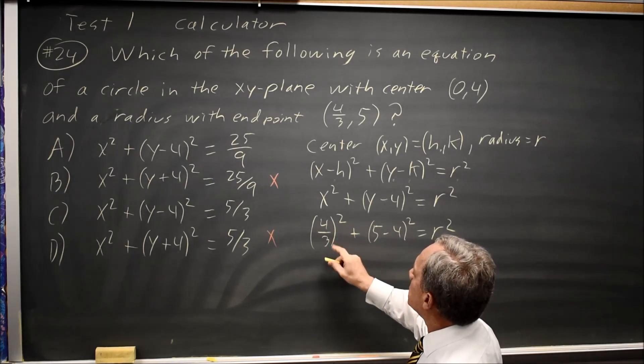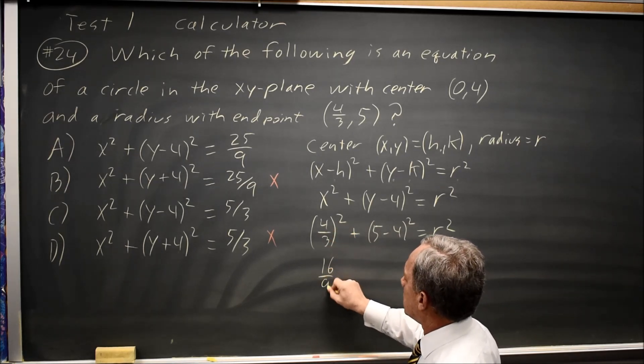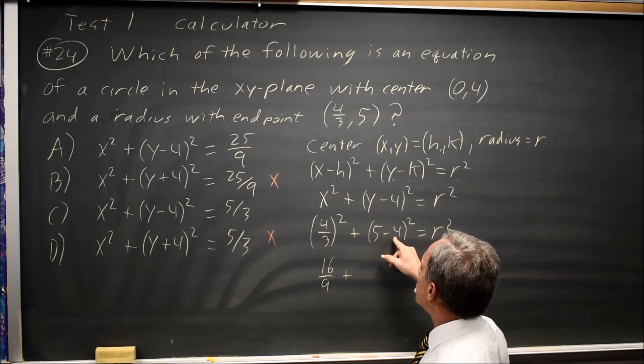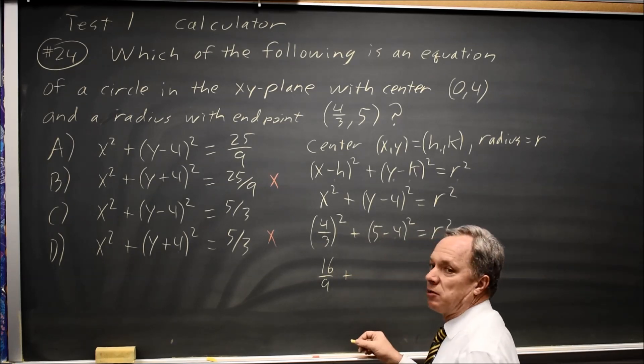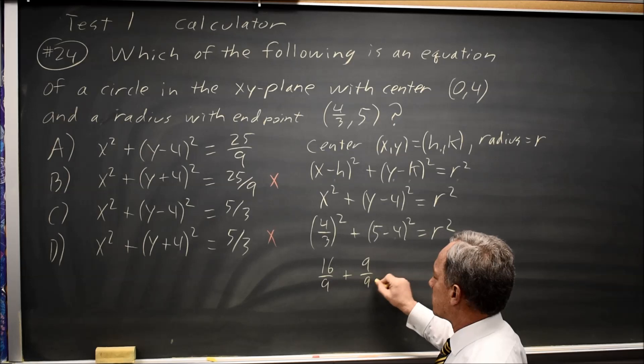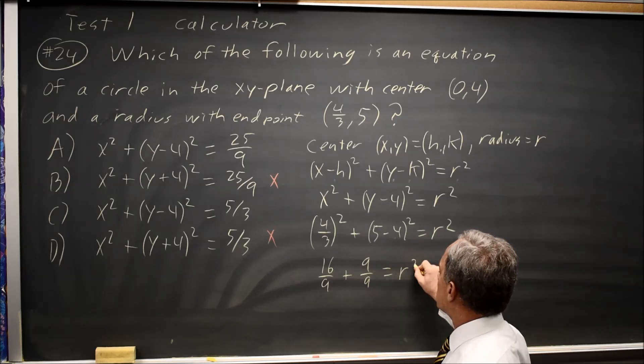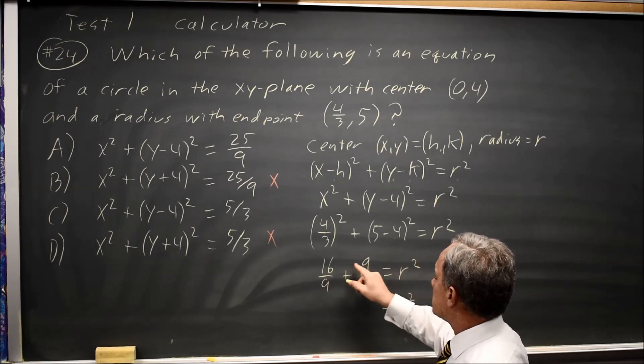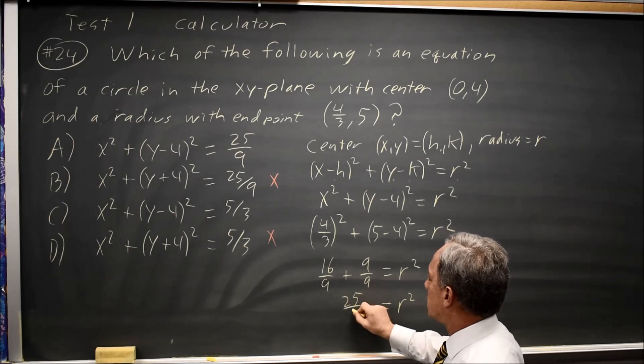4 thirds squared is 16 over 9. 5 minus 4 is 1, 1 squared is still 1. Getting a common denominator, I can write that as 9 over 9. So r squared equals 16 plus 9 is 25 over 9.